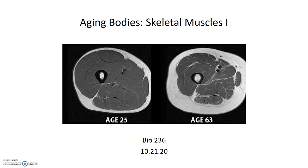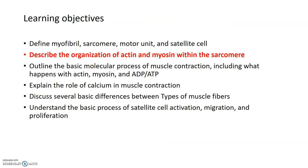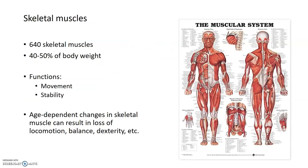This is the first part of a lecture on skeletal muscle and aging from October 21st, 2020. The main objective is to describe how skeletal muscles are organized in their contractile units, known as sarcomeres. The human body has 640 different skeletal muscles that make up about 40 to 50 percent of our body weight. The main functions of skeletal muscle are movement as well as stability — maintaining our balance and posture.